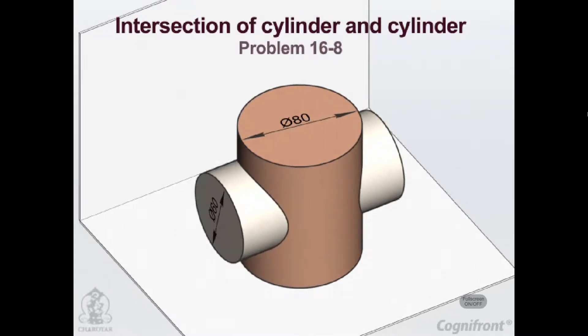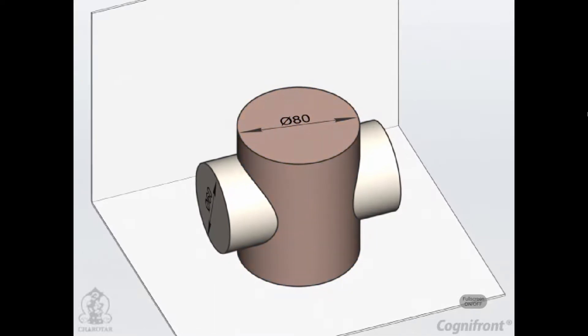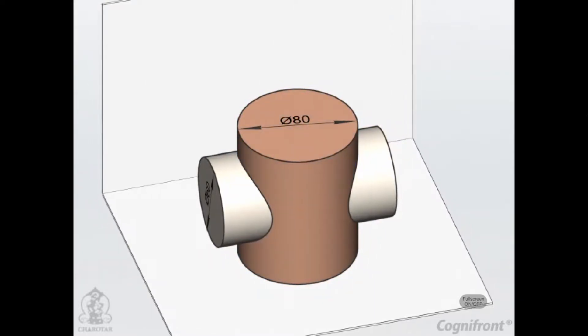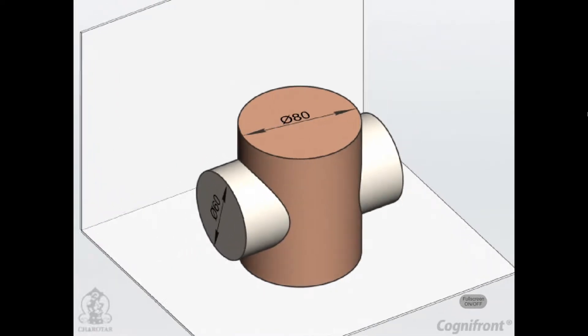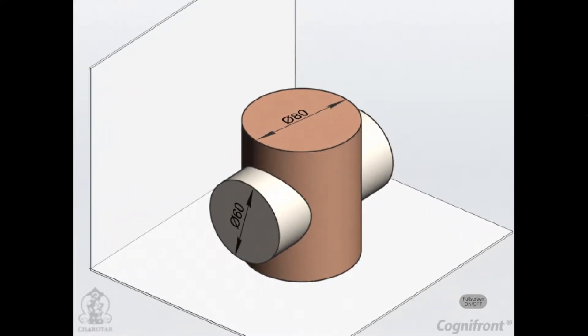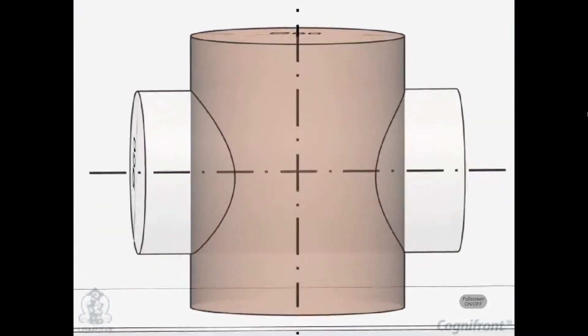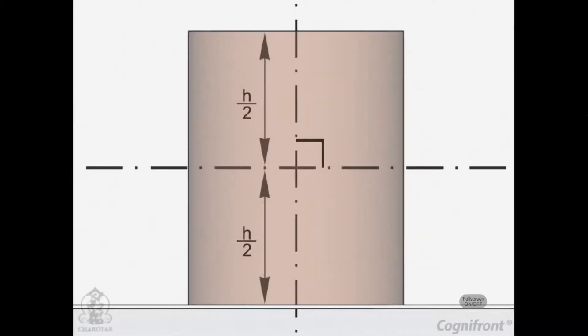Problem 16.8: A vertical cylinder of 80 mm diameter is completely penetrated by another cylinder of 60 mm diameter, their axes bisecting each other at right angles.